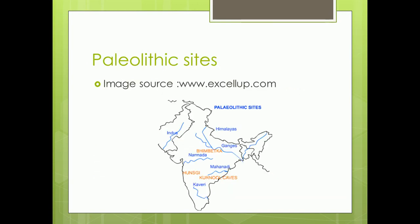Key Paleolithic sites include Bhimbetka in Madhya Pradesh, where many rock shelters were found — people sheltered in rocks to protect themselves from bad weather and wild animals. Hunsagi in Yadgir district, Karnataka, is also important; many stone tools were found there and it may be asked in examinations. Kurnool Caves in Andhra Pradesh are significant because ashes were found there, confirming that Paleolithic humans had knowledge of fire.